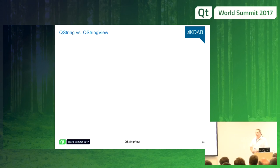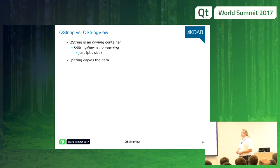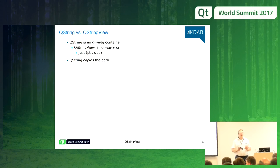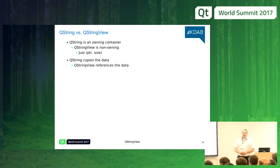Comparing QString with QStringView: QString is an owning container, whereas QStringView is non-owning — it's just a pointer and a length. When you construct a QString, it copies the data. Yes, it uses implicit sharing which doesn't copy immediately, but if you modify it later it will detach and you have two separate copies. QStringView just references the data; it never copies the data.